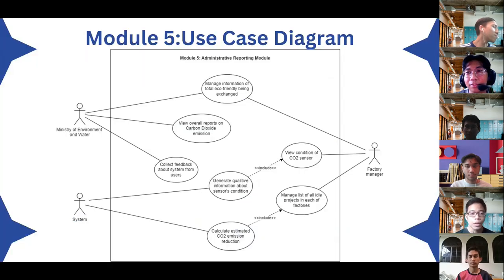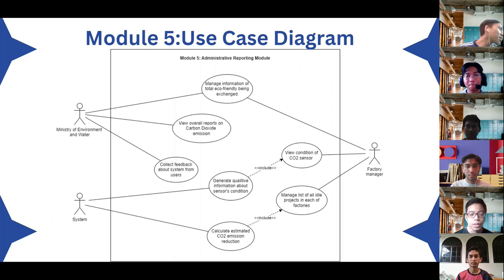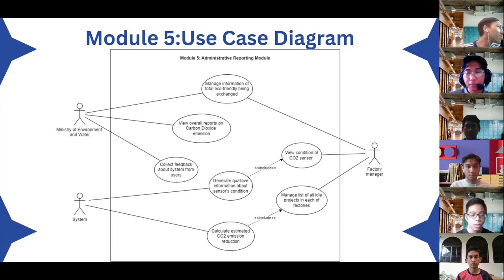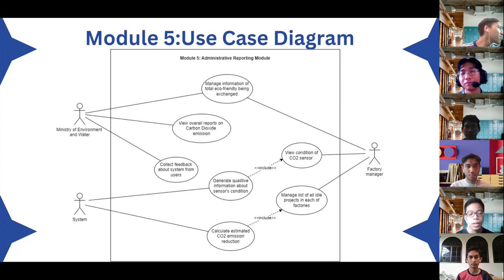Now I will talk about module five, which is administrative reporting. Here is the use case diagram for module five. There are three actors: the Ministry of Environment and Water, System, and Factory Manager. You can see the relationship and connection between these actors in the use case diagram.